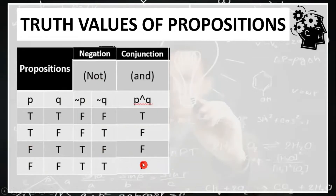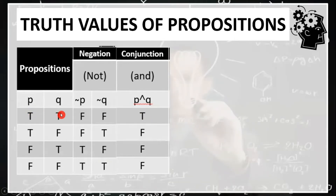For conjunction, P and Q is only true if both propositions P and Q are true. Otherwise, it is false.